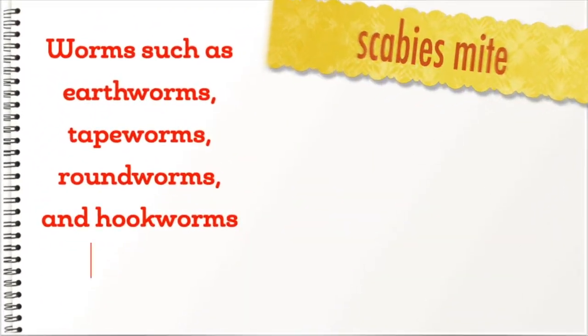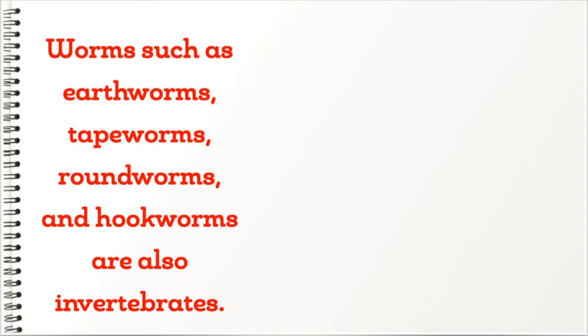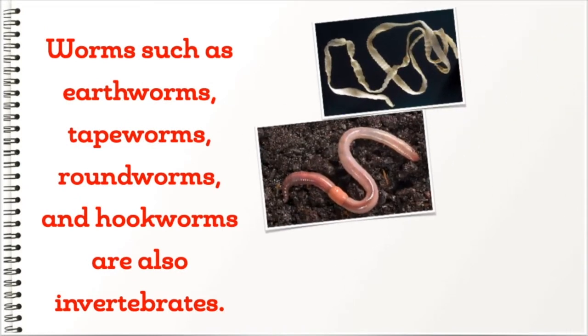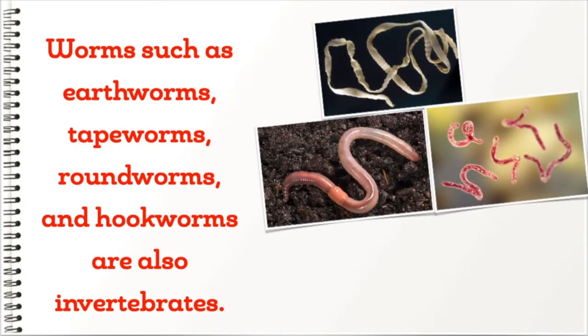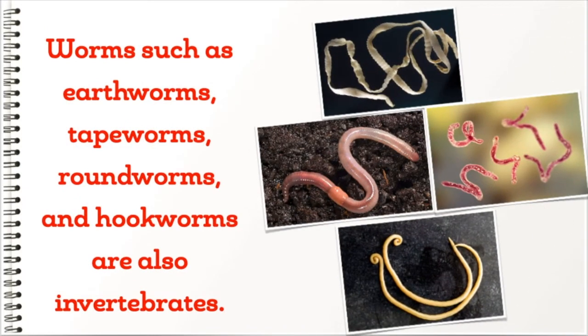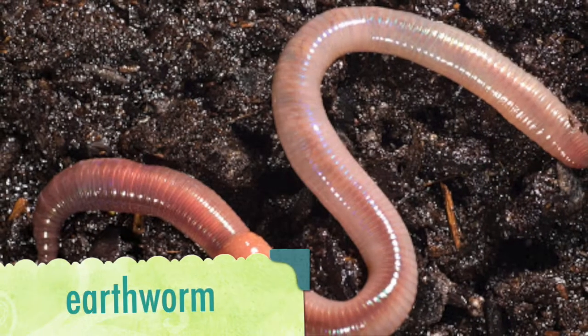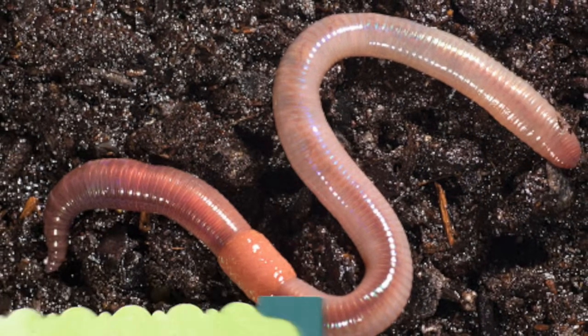Worms such as earthworms, tapeworms, roundworms, and hookworms are also invertebrates. Some worms have segments and others do not. Other worms are flat.